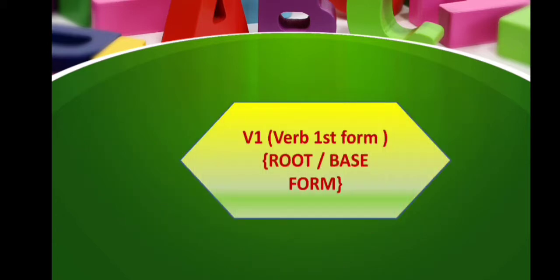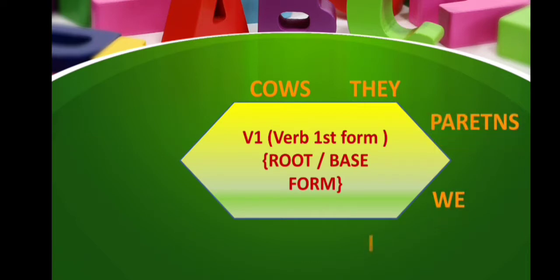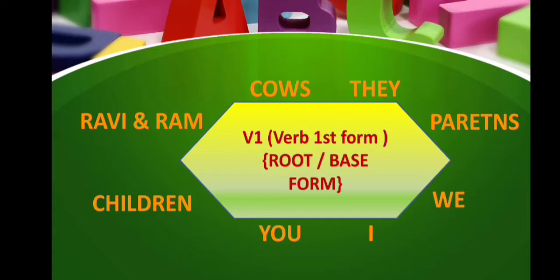When you use the verb's first form or base form, examples of plural subjects are: cows, they, parents, we, I, you, children, Ravi and Ram. All these examples are plural, so we use the verb's first form or base form for them.